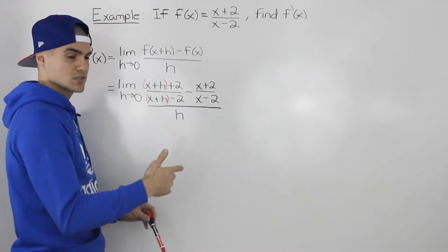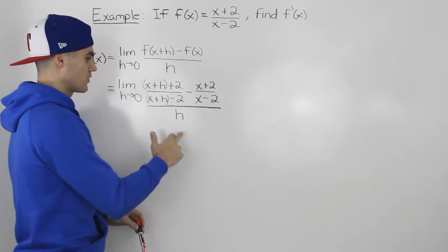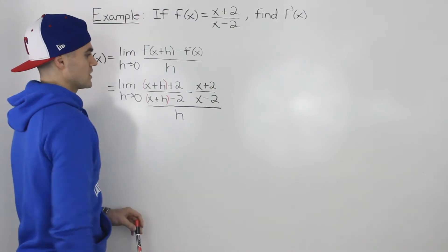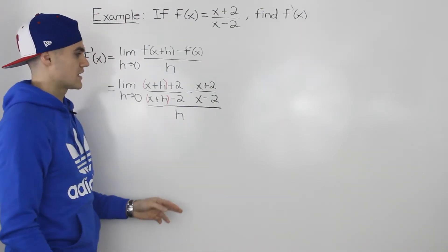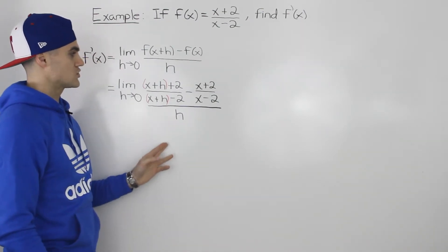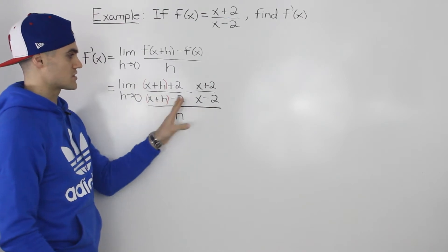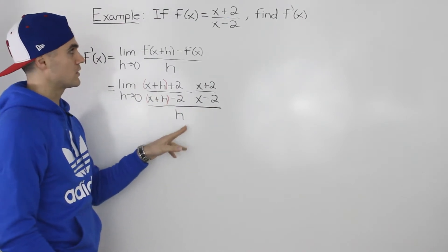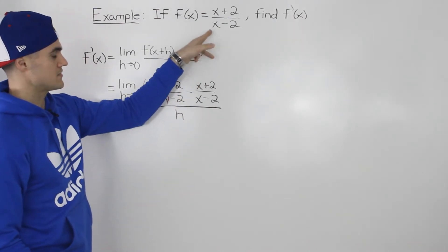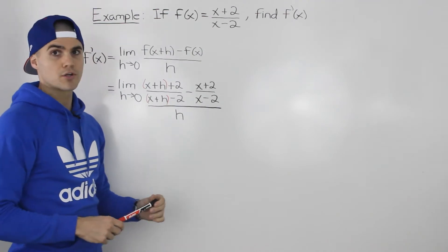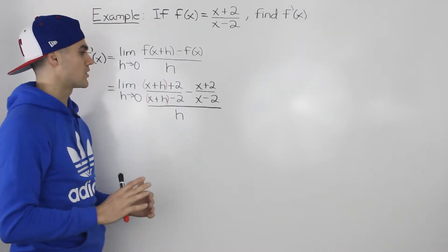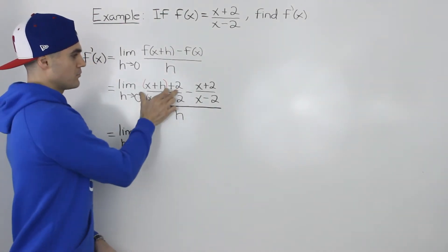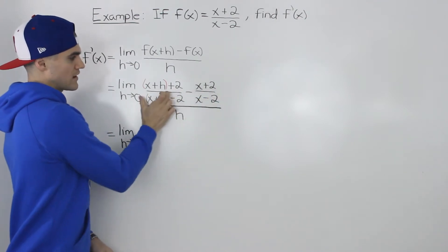As we've mentioned before, our goal is to get rid of that h in the denominator. To get rid of this h, we're going to have to do some algebra, and the algebra in this specific question for this specific function is going to be pretty crazy. So brace yourselves. The first thing we want to do is take both of these fractions that we are subtracting in the numerator and put them into one fraction.